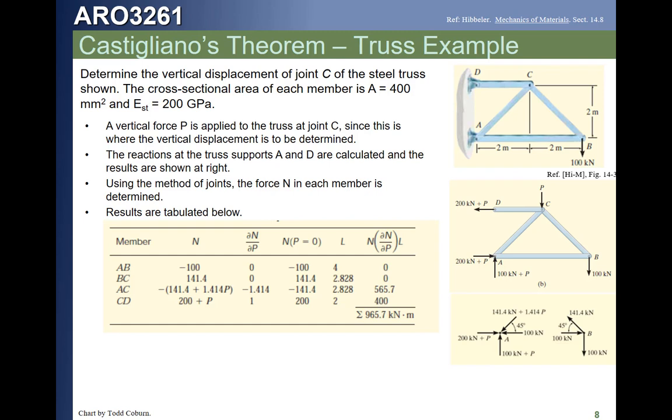Once we have evaluated, we have the force in each member, N, and the change in force with respect to P. We then can evaluate what the actual force is in each member by just plugging in our value of P, which happens to be zero since it was a virtual force. We end up with that fourth column.